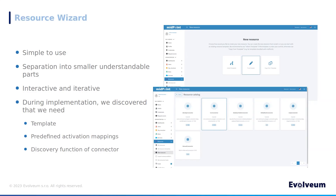Our first requirement for the new resource wizard implementation was simplified resource creation. The old resource wizard was really complicated and only a small number of administrators used it. We separated the configuration into small wizard sequences which are really easy to use. Where possible, we split the configuration of individual wizard steps into a simple view with important configuration attributes and an advanced view for more complex configurations. We paid attention to making the process of creating a new resource interactive, aiming to guide the user through the entire configuration sequence with feedback at every opportunity.